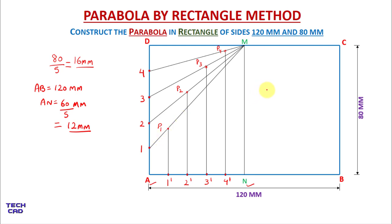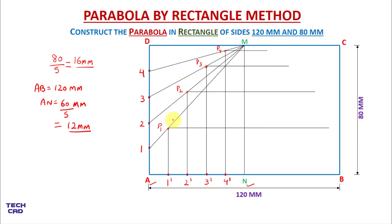From all these points I will take horizontal lines — from P4 I will take a line towards the right side, in the same way from P3, from P2, and from P1. There is no fixed length for these lines; I will just take them as random projection lines.